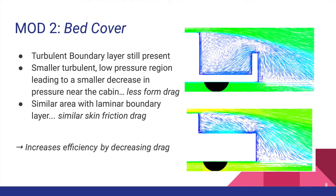When a bed cover is applied, the size of the low pressure region decreases. As such, lower streamline curvature and density is present. Therefore, the pressure at the back of the cab is greater, resulting in less form drag. Further, both possess comparable skin friction force, making the bed cover possess less overall drag.